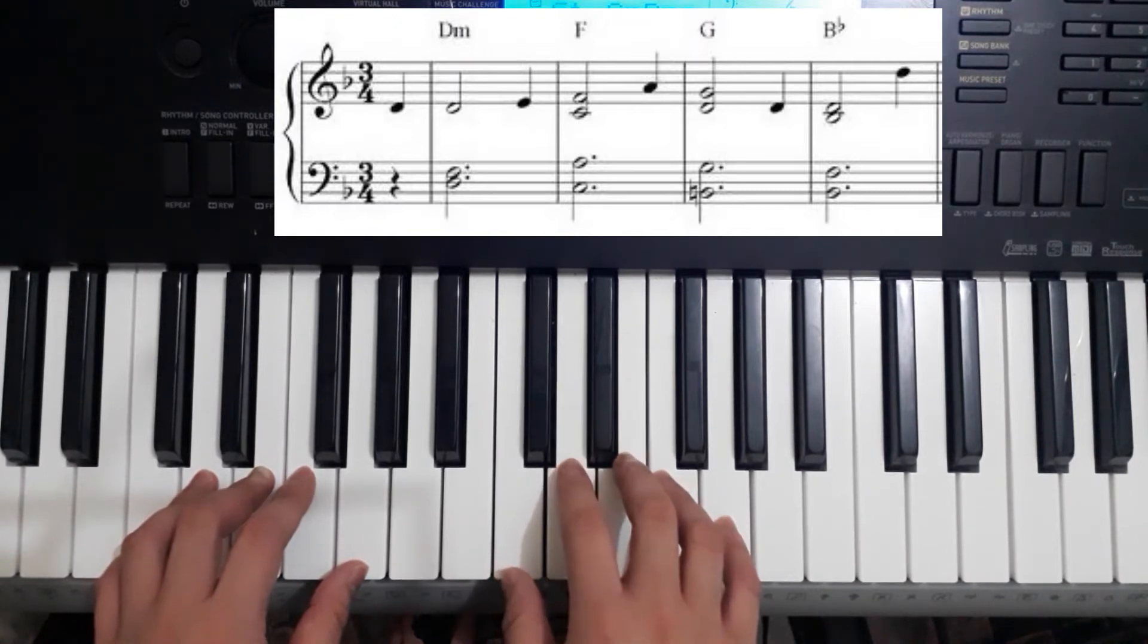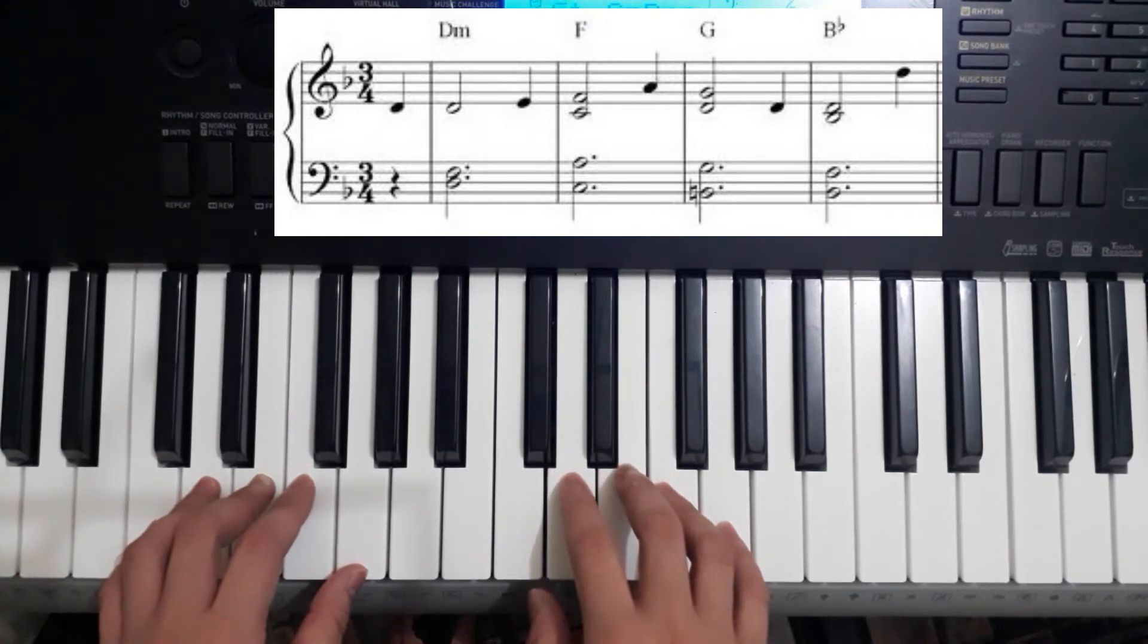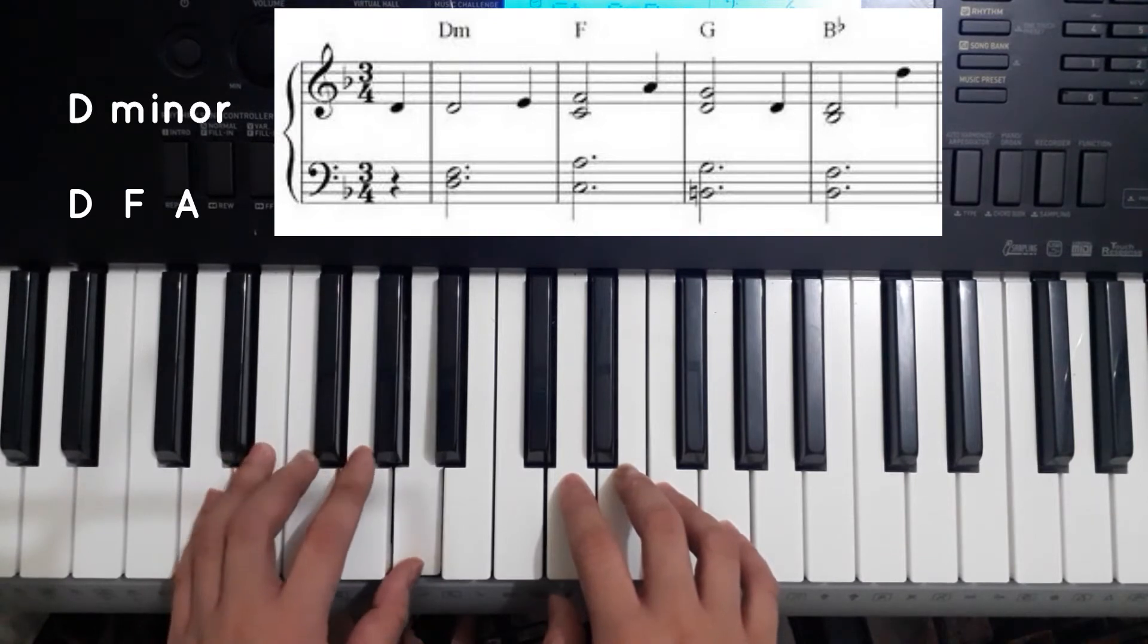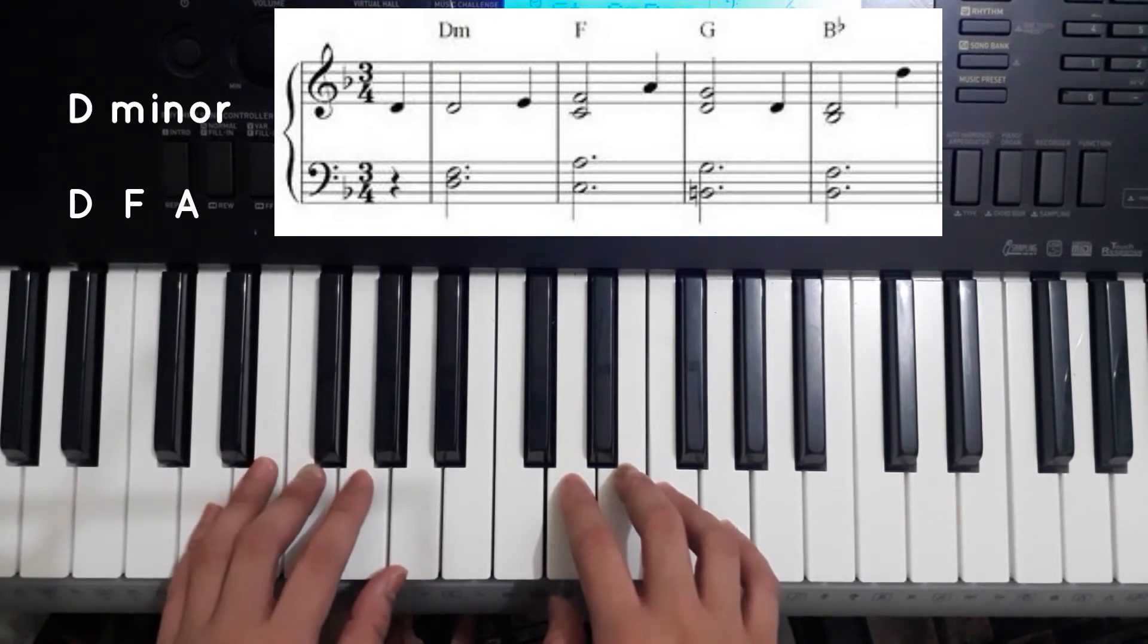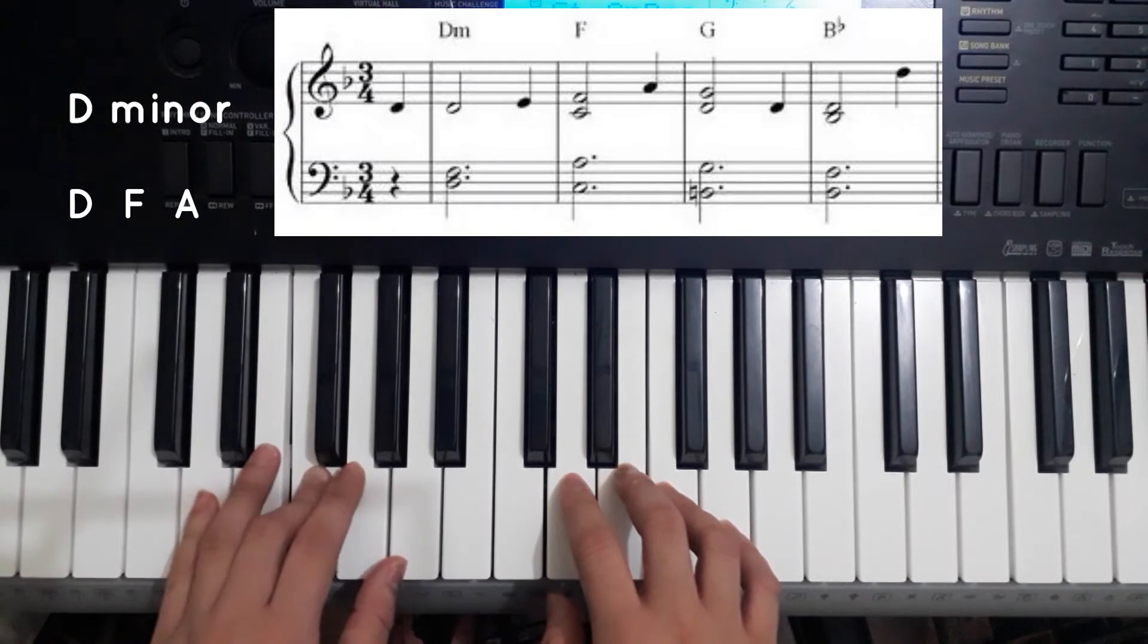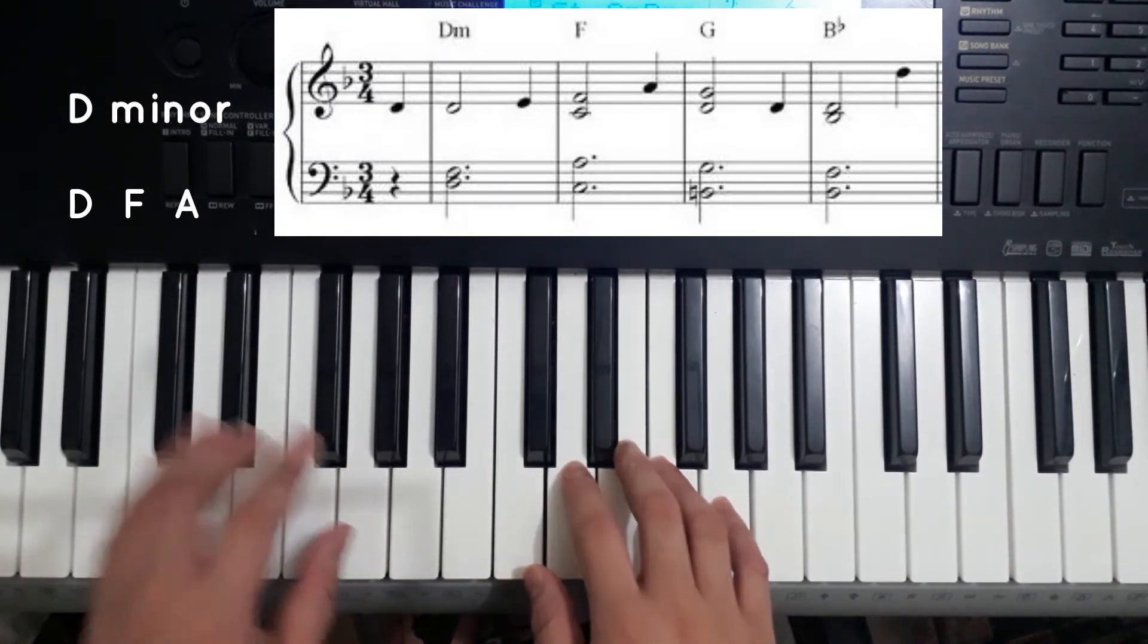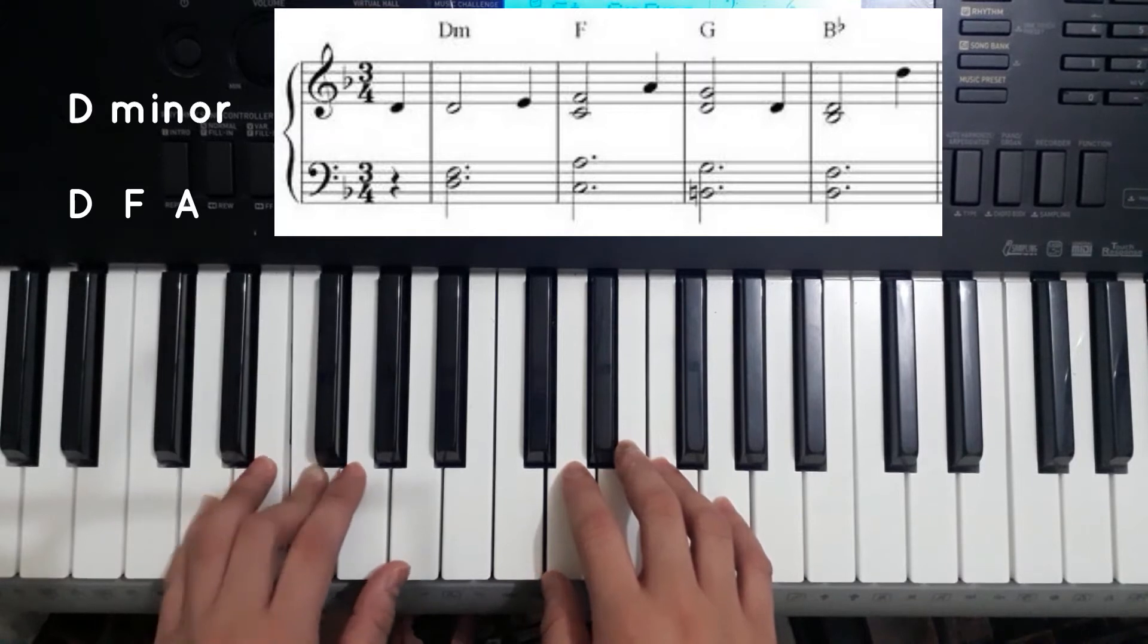So on second bar, you can see that the chord for the second bar is D minor. So in D minor, you can use the D, F, and A. Even though it says only to play the D and F, we're going to play on the right hand D and on the left hand D, F, A. On the second note is E.